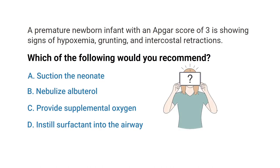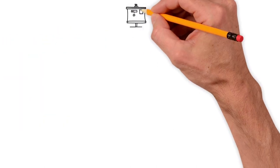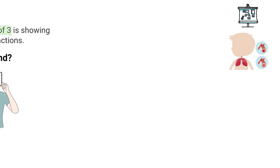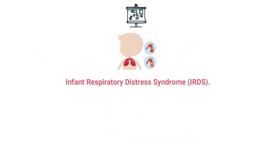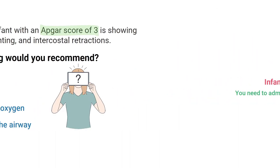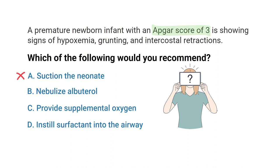Let's break it down. This infant is showing signs of severe respiratory distress, and an extremely low Apgar score of three tells us the neonate most likely has infant respiratory distress syndrome. In order to improve the infant's condition, you need to administer exogenous surfactant, which can be instilled directly into the airway. There are no indications for suctioning, and albuterol is not indicated at this time either.